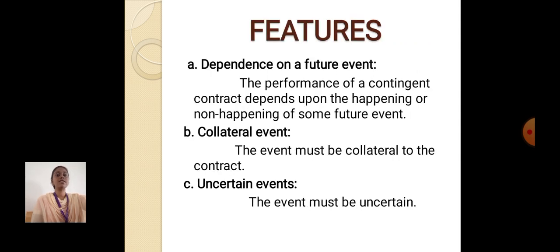Features of a contingent contract: dependence on a future event, collateral event, and uncertain event.